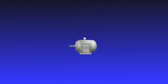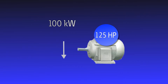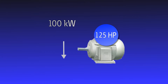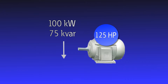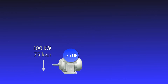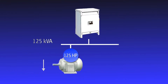Inductive loads require two kinds of power. They need real power, measured in kilowatts, to perform the actual work of creating heat, light, motion, and so on. They also need reactive power, measured in KVAR, to sustain their magnetic field. Together, these two make up apparent power.